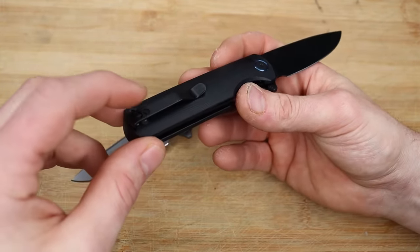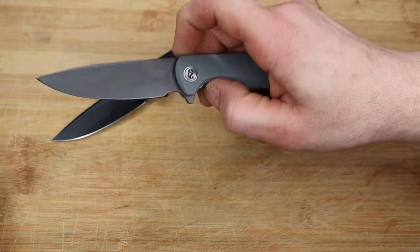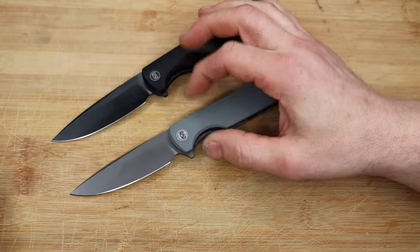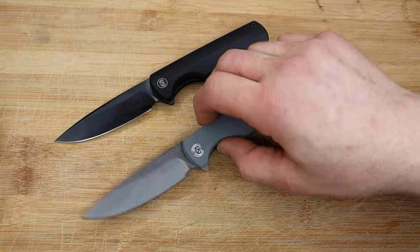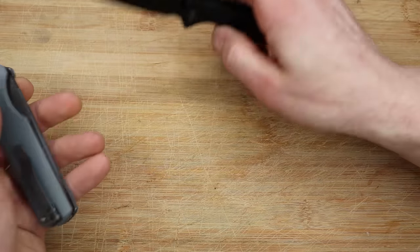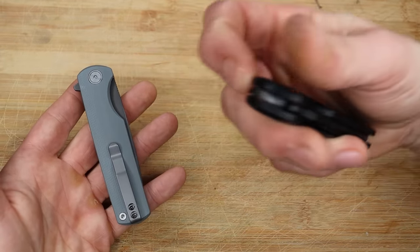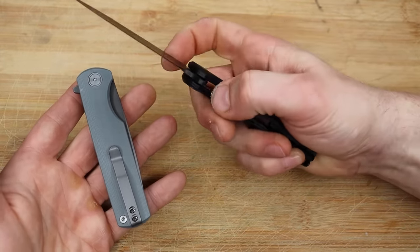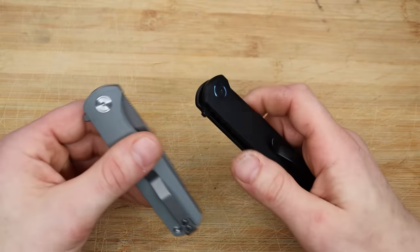As far as nitpicks and negatives, my only thing I could say is the clip could be reversible, T8 hardware would be nice. I would have loved to have seen this with like a 14C or something, but hey, for 30 bucks I'm not complaining. D2 is just fine. With 30 dollars, I say basically 50 and under, 45 and under for D2 is a good steal. It's going to hold a good edge.